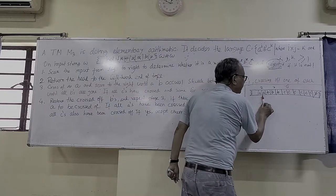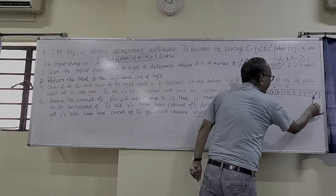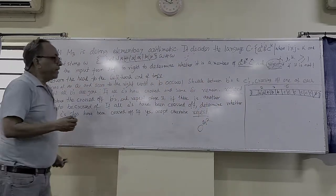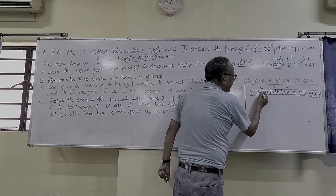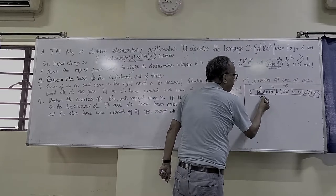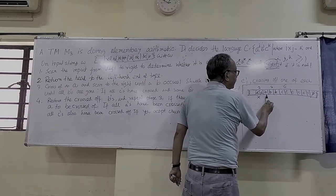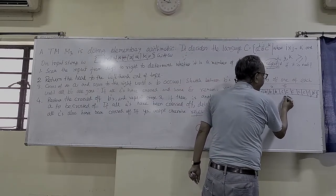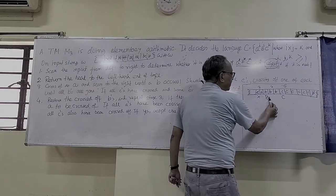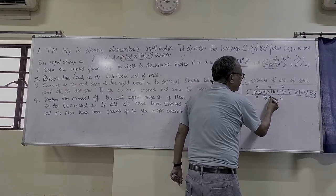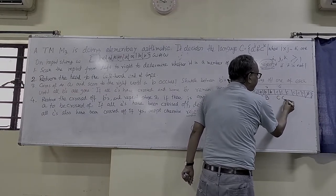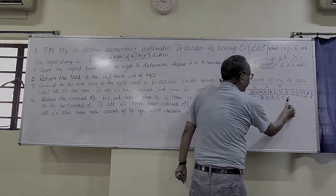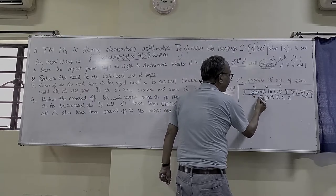After coming back, it changes one A to a crossed A. Then it ignores the remaining A's. When it encounters a B, it converts that B to capital B. Then it goes to C and makes it a capital C. Then again it comes back, sees another B, makes it capital B, goes to the next C, makes it capital C. It goes further: another C becomes capital C. Again it comes back.